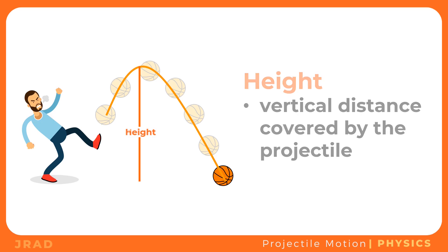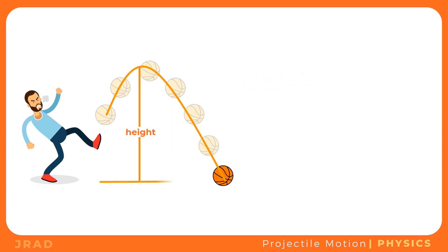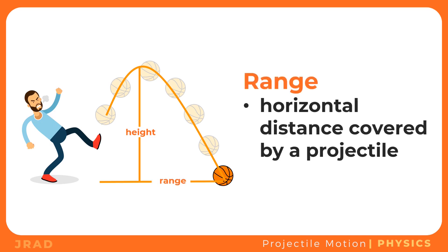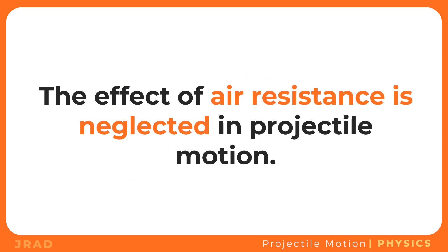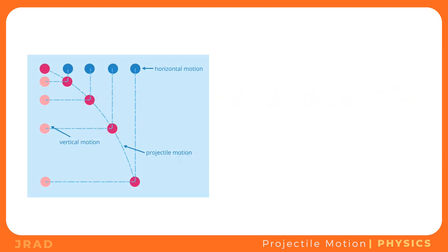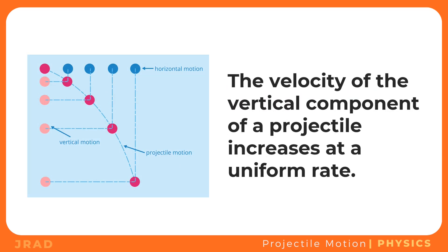Without gravity, any object thrown horizontally in the air will follow a straight path, but because of gravitational force it follows a curved path. This curved or parabolic path followed by a projectile is called trajectory. As the projectile moves, it covers a vertical distance called height, while the range is the horizontal distance covered by a projectile. Keep in mind that, just like free-fall, the effect of air resistance is also neglected in projectile motion.